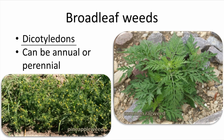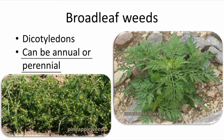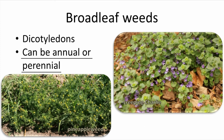Broadleaf weeds are the dicots. Their vasculature can be seen as a network of veins in the blades of the leaf. Like monocots, dicot weeds can be annual, like the pineapple weed and ragweed shown here, or perennial, like Creeping Charlie.